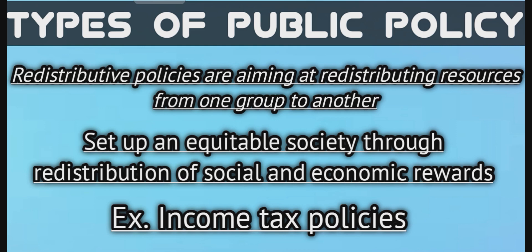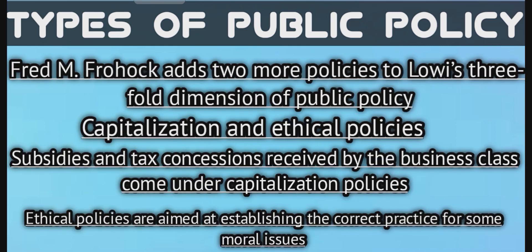Fred M. Frohock adds two more policies to Lowi's three-fold dimensions of public policy: capitalization and ethical policies. Subsidies and tax concessions received by the business class come under capitalization policies. Such distribution, in theory if not in practice, is aimed at increasing the productive capacity of a society's institutions. Although normally included in distributive policies, capitalization policies are not like the primary consumptive distribution of welfare programs.